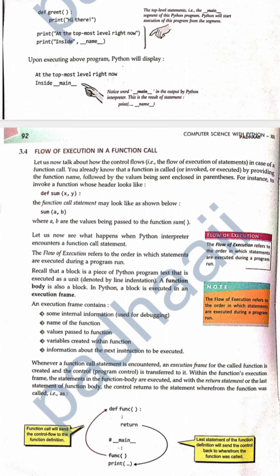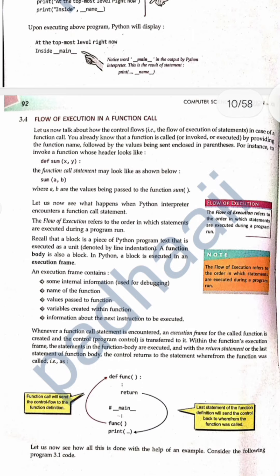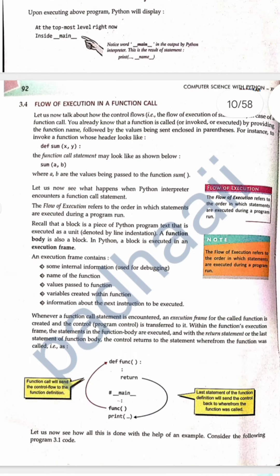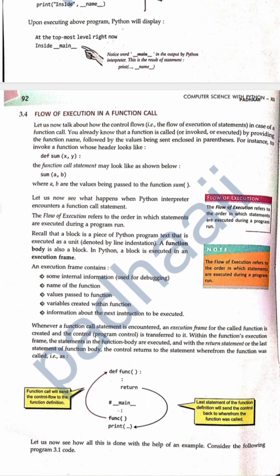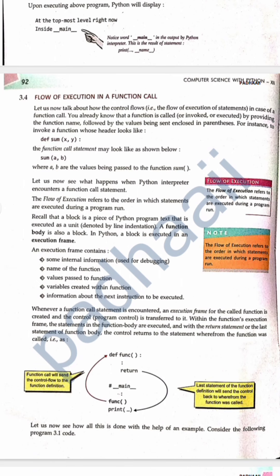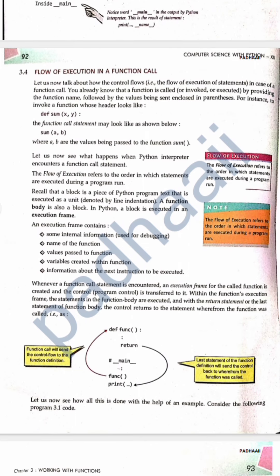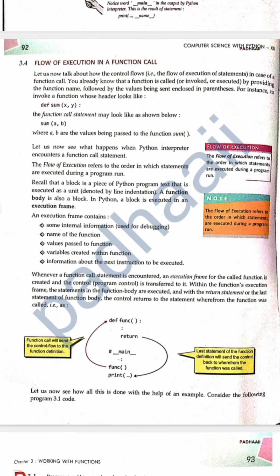How does the flow of execution in a function call work? There is a function definition — define sum x comma y. Whenever there is an invocation taking place, a function is called or invoked by providing the function name followed by the values. An execution frame contains internal information used for debugging: name of the function, values passed, values created within the function, and information about the next instruction.